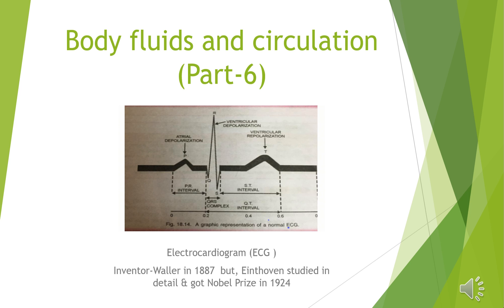A normal electrocardiogram is composed of a P wave, a QRS wave complex, and a T wave, as seen in the diagram. The letters are selected arbitrarily and not for any particular value. The P wave is a small upward wave that represents atrial depolarization, which leads to atrial contraction. It is caused by the activation of the sinoauricular node.